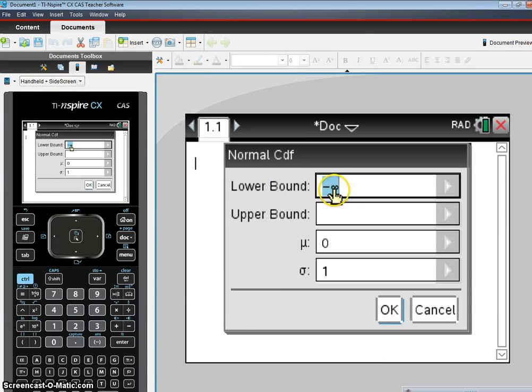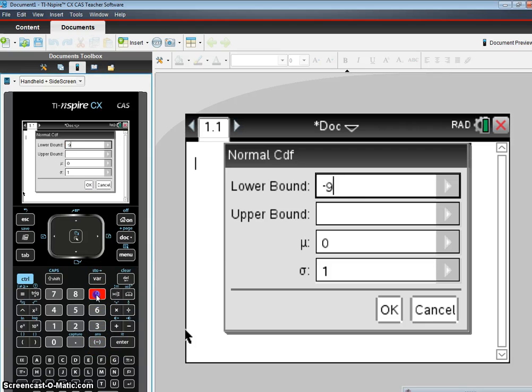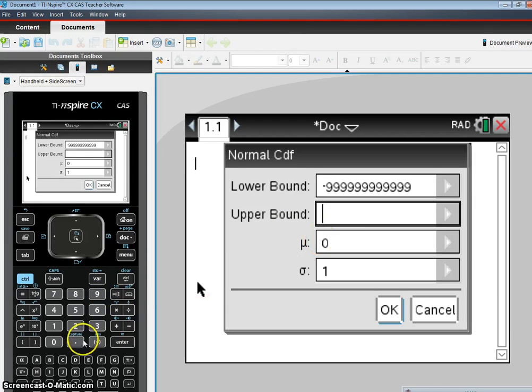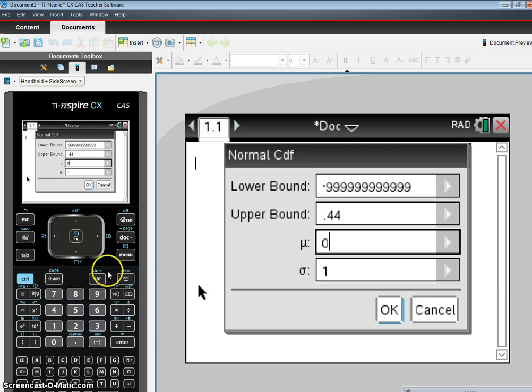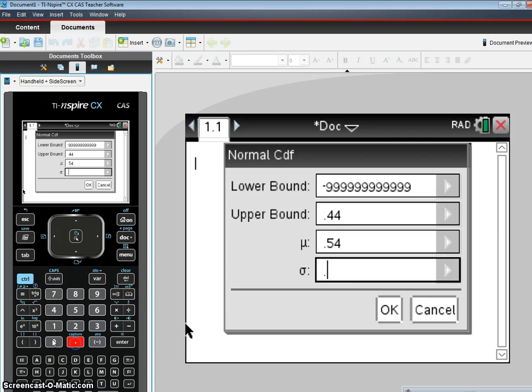We're going to go from negative 999, a really small number. That will be our lower bound. Our upper bound will be 0.44. What is our mean? Our mean is 0.54. And our standard deviation is 0.07. We hit enter.